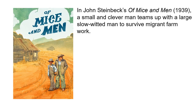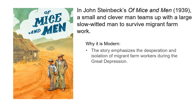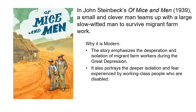John Steinbeck's 'Of Mice and Men': a small clever man teams up with a large slow-witted man to survive migrant farm work. Why it is modern: the story emphasizes the desperation and isolation of migrant farm workers during the Great Depression. It portrays the deeper isolation and fear experienced by working class people who are disabled. In other words, everyone's alienated and disillusioned.